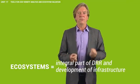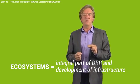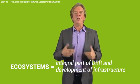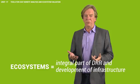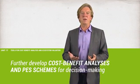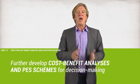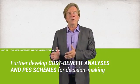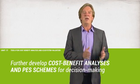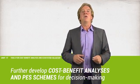In conclusion, first, ecosystems need to be considered as an integral part of disaster risk reduction. And second, there is much more that can be done to further develop both cost-benefit analysis and PES schemes for decision-making for EcoDRR and EBA. One of the main challenges is how to value many of the indirect benefits that we get from ecosystems, such as biodiversity.